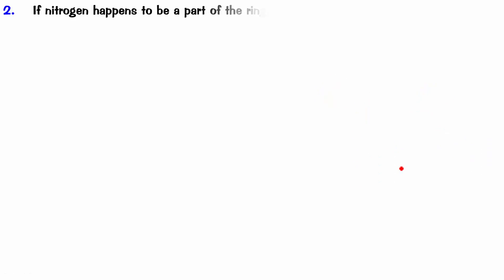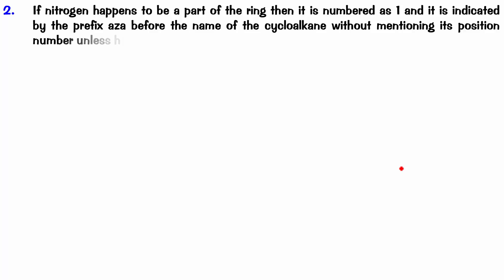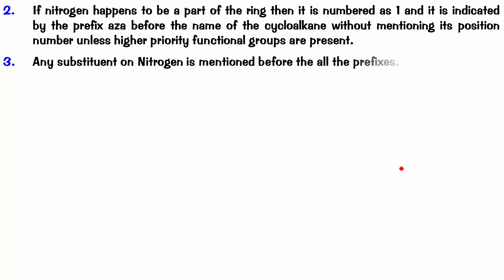So rule number 2 says if nitrogen happens to be a part of the ring, then it is numbered as 1 and it is indicated by the prefix aza before the name of the cycloalkane, without mentioning its position number, unless higher priority functional groups are present. So you really don't have to say the word 1 again and again. The third point says any substituent on nitrogen is mentioned before all the prefixes. So let's get going.